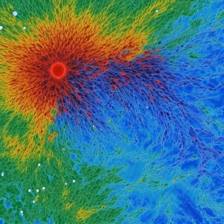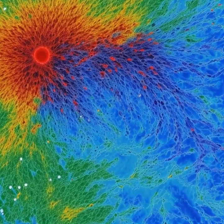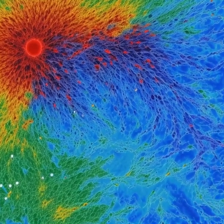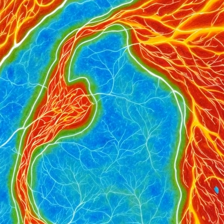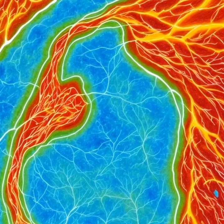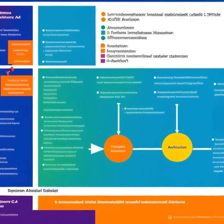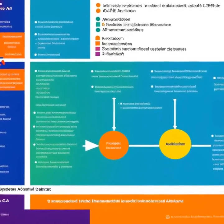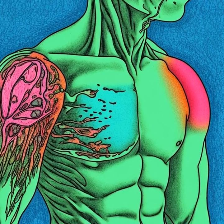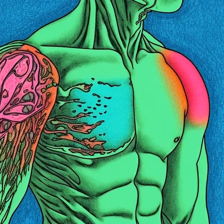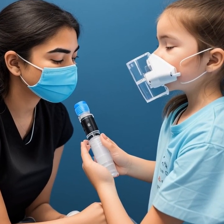The immune cells, including mast cells, eosinophils, and T helper cells, are also essential players in the immune response to asthma. Mast cells are responsible for releasing histamine and other inflammatory mediators upon exposure to allergens. Eosinophils release toxic proteins that can further damage the airway tissues and contribute to inflammation. T helper cells, specifically Th2 cells, orchestrate the immune response by producing cytokines that promote inflammation and recruit other immune cells to the site of inflammation.